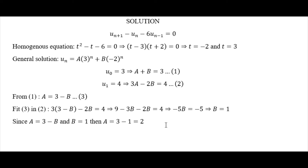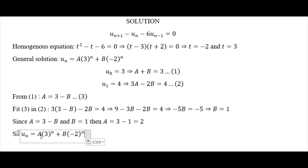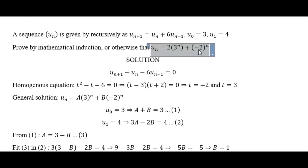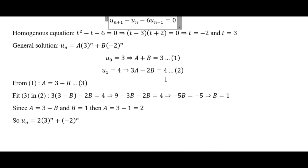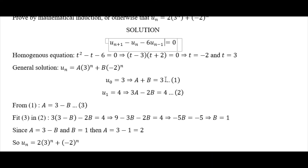Since A = 3 - B and B = 1, we get A = 3 - 1 = 2. Our general solution u(n) = A·3ⁿ + B·(-2)ⁿ becomes u(n) = 2·3ⁿ + 1·(-2)ⁿ, which confirms the required result. This shows how we can apply knowledge of differential equations to sequences and series.